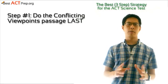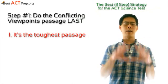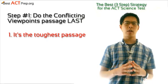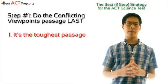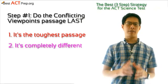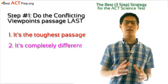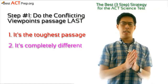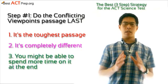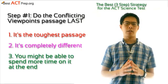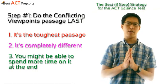There are at least three reasons for doing this. First, the conflicting viewpoints passage is generally considered to be the toughest passage out of the seven, so you don't want to accidentally spend too much time on it before you get to the other easier passages. Second, the conflicting viewpoints passage is completely different in style than the other six passages, so it's better to get into the proper mindset for it last instead of interrupting your flow. And third, if you're able to finish the other six passages a little early, you'll be able to spend some extra time on this passage and hopefully do a little better on it.